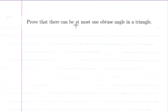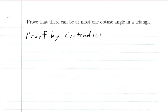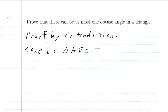We're going to prove that there can be at most one obtuse angle in a triangle. We'll do this proof by contradiction. We'll have two cases. The first case is going to be if triangle ABC has two obtuse angles.